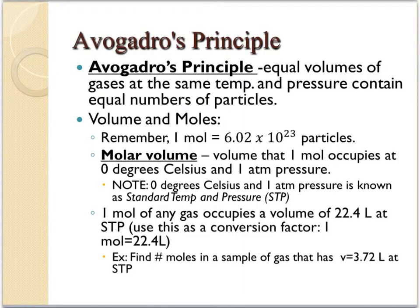Let's first start out by looking at Avogadro's principle. You don't have to write every single thing down — just write down the key pieces. The one thing I want you to remember about Avogadro's principle is it says that when you have equal volumes of gases being held at the same temperature and pressure, they have equal numbers of particles. Equal volumes held at the same temperature and pressure tells us that we have the equal number of particles.